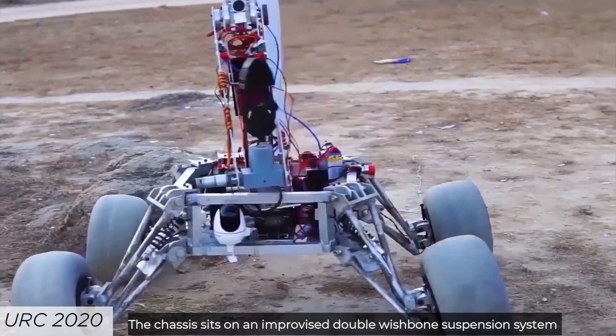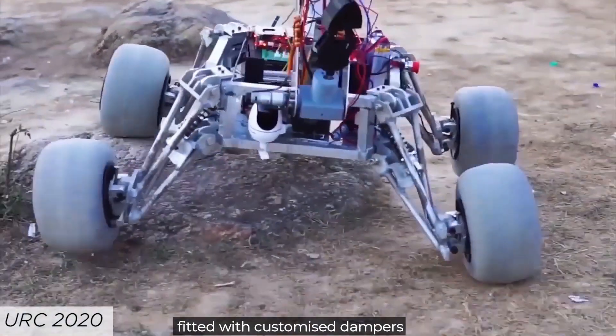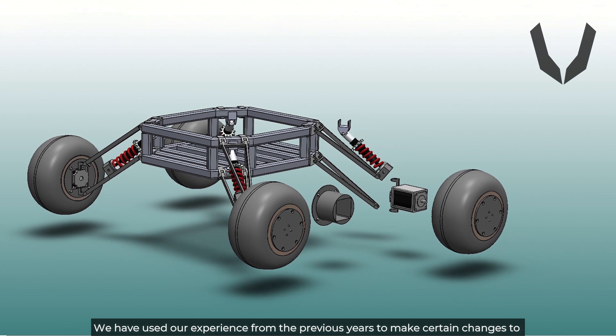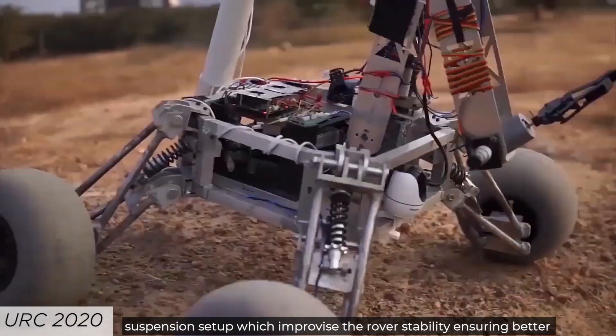The chassis sits on an improvised double wishbone suspension system fitted with customized dampers. We have used our experience from previous years to make certain changes to the suspension setup which improves the rover's stability, ensuring better traversal on rugged terrain and helping the rover maintain a low center of gravity.